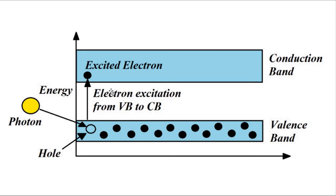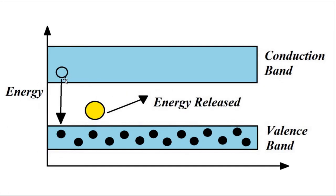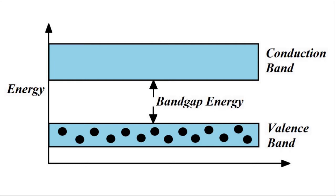This excited electron cannot stay in the excited state in the conduction band as a free electron for an indefinite period of time. It has to drop back down with the release of energy. The time period of its stay in the conduction band is of the order of nanoseconds. How we can make this transition smooth is called the adjustment of band gap energy. If this energy is high, the transition will be difficult because the valence band electrons have to overcome more resistance. If the band gap energy is less, there is less opposition. All this process of adjusting the band gap energy is called band gap modulation.